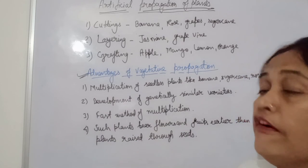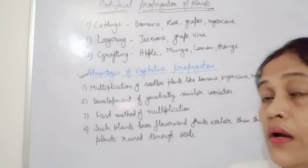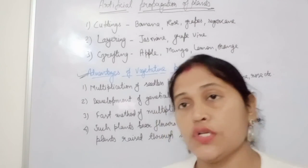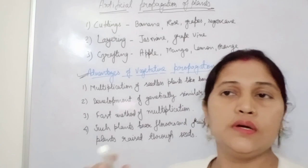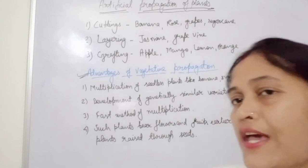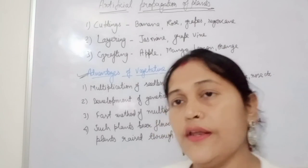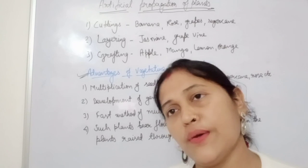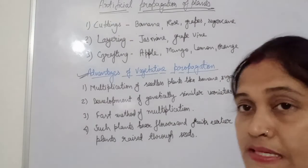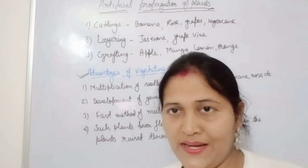We have completed asexual reproduction. Basically there are two types of reproduction — asexual and sexual — and the asexual part is almost finished. In the next video we will start sexual reproduction in flowering plants. Till then keep watching, and please like and subscribe to this channel. Thank you, goodbye, take care.